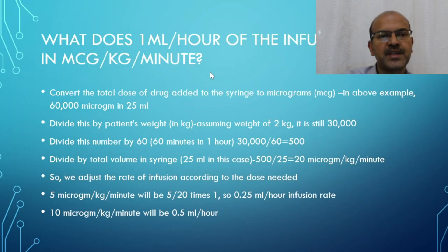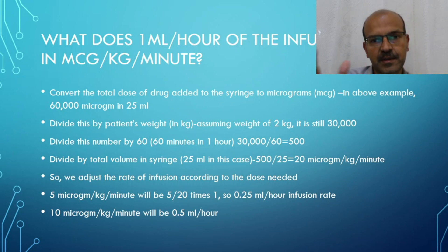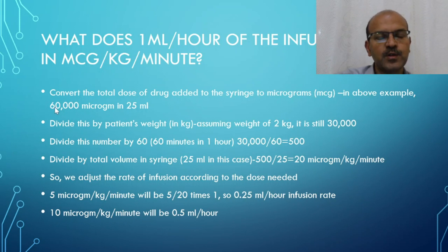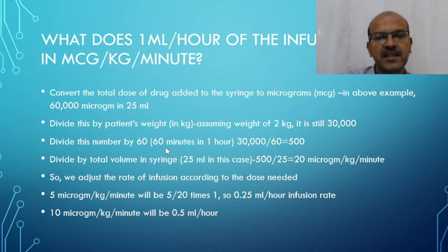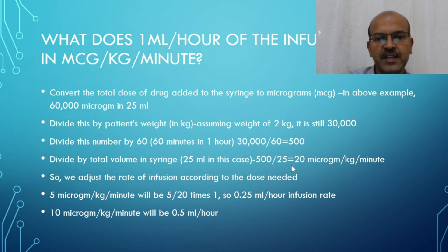To calculate what 1 mL per hour equals in micrograms per kilogram per minute: convert the total drug in the syringe to micrograms — at 2400 µg/mL in 25 mL, that is 60,000 micrograms. Divide by patient weight (e.g., 2 kg) = 30,000. Divide by 60 minutes = 500. Divide by total volume (25 mL) = 20 micrograms per kilogram per minute. So 1 mL per hour delivers 20 µg/kg/min.